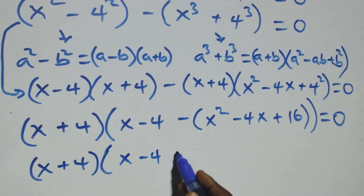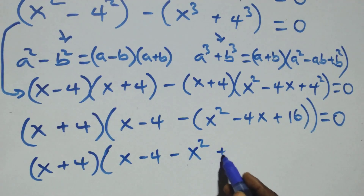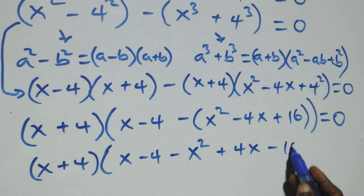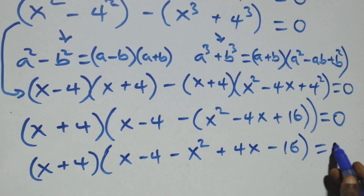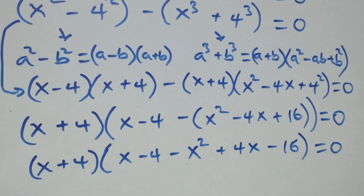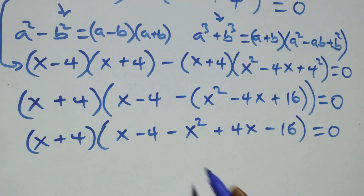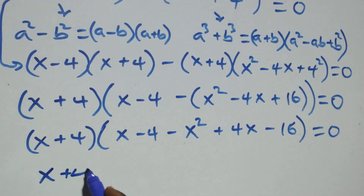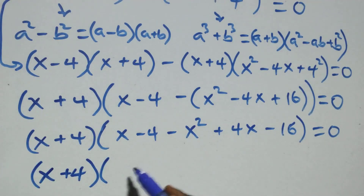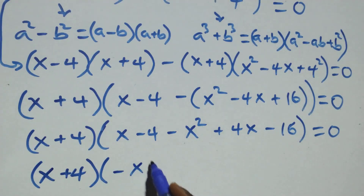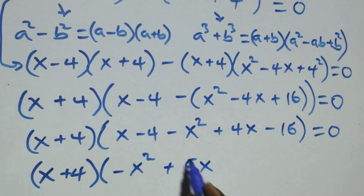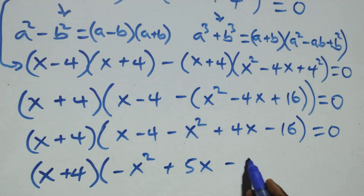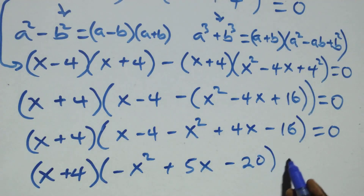Expanding the inner bracket we have bracket x plus 4 times bracket x minus 4 minus x squared plus 4x minus 16, close bracket, equals zero. Rearranging this becomes bracket x plus 4 times bracket minus x squared plus 5x minus 20, equals zero.